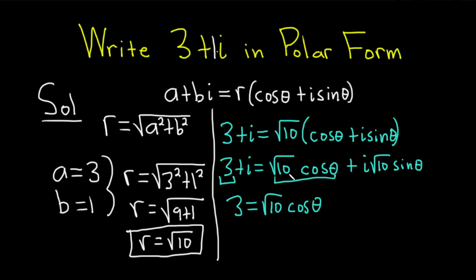And then here you get, there's a 1 here. You get 1 equals square root of 10 sine theta. This means that the cosine of theta is equal to 3 over root 10.